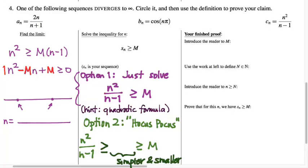The first idea that we had was to just go directly ahead and solve this inequality. n squared over n minus 1 is greater than or equal to M. So when you rearrange that into a quadratic, you get something that looks like n squared minus Mn plus M is greater than or equal to 0.